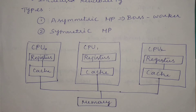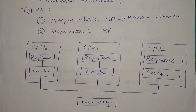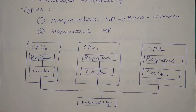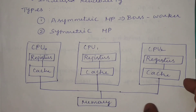In symmetric multiprocessing, all processors follow the same architecture. But in asymmetric, each processor may have a different architecture. Symmetric multiprocessing is not easy to design or handle. But asymmetric is somewhat easier to design because there is one processor that monitors all remaining processors. It is also somewhat cheaper, whereas symmetric multiprocessing is costlier.